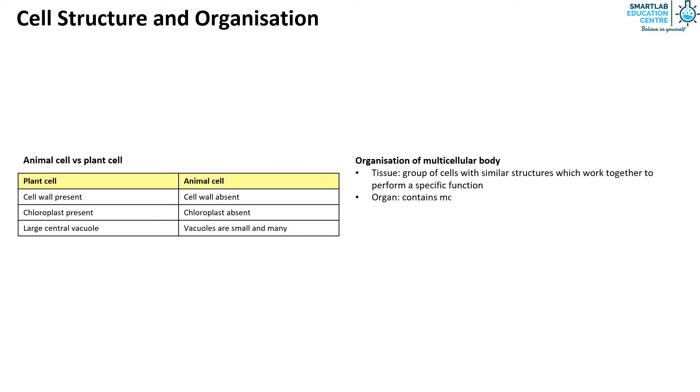An organ contains more than one type of tissue all working together for a specific function. An organ system consists of several organs working together for a common purpose. Finally, an organism is made up of many different organ system working together.